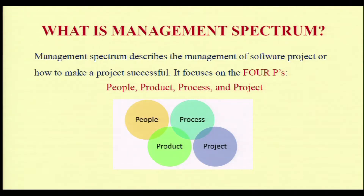In my initial lectures, I told you more than 54 percent of software goes to failure, primarily because of any one of the failures that has happened in all these four P's. If you ask what is management spectrum, it describes the management of software, or how to make a project successful — in what capacity the project is being successful within an organization.